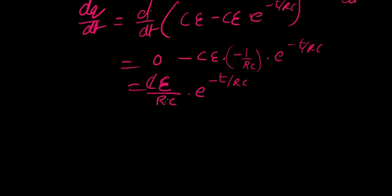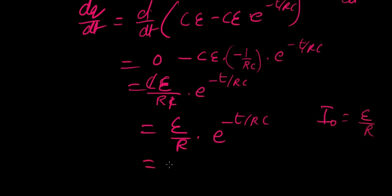ce over rc times e power minus t over rc. And here, c cancel. So it's e over r times e power minus t over rc. And from the initial discussion we had, what do we know? Initial current in the circuit is given by e over r.